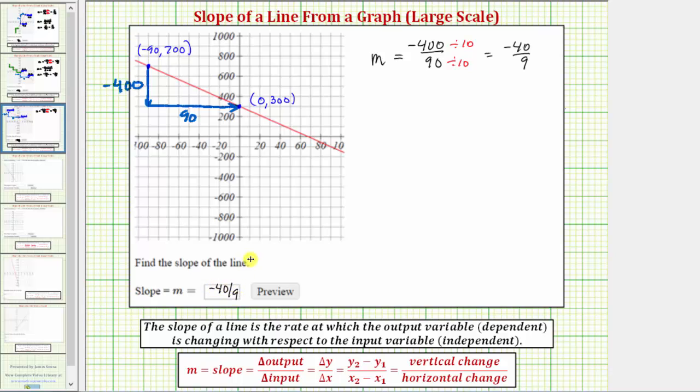This indicates that the output, or y, decreases by 40 each time the input, or x, increases by 9.